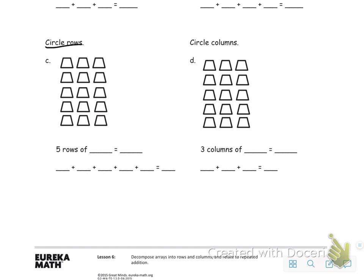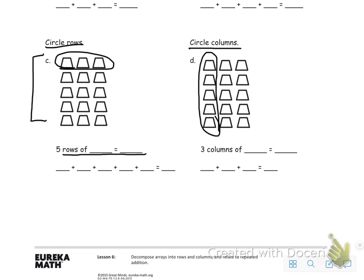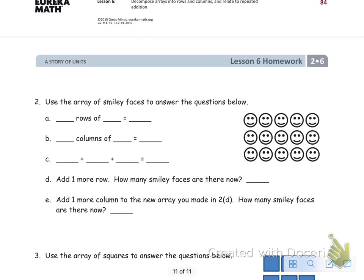Circle all the rows you see in this problem and use that information to fill in the blanks. Then come over here and circle the columns — this is an example of a column — and use the information from circling all those columns to fill in the rest of the problem.